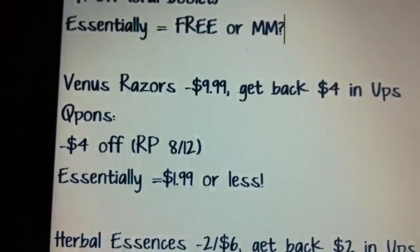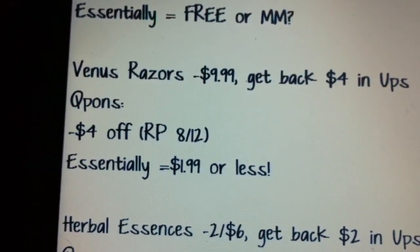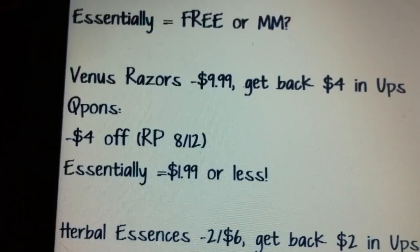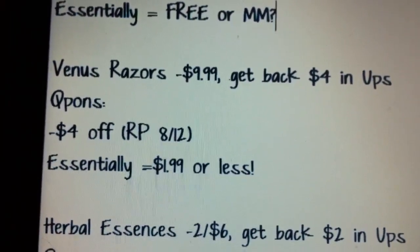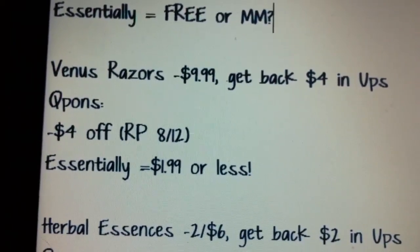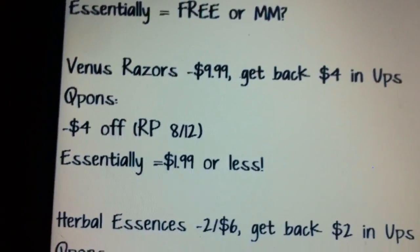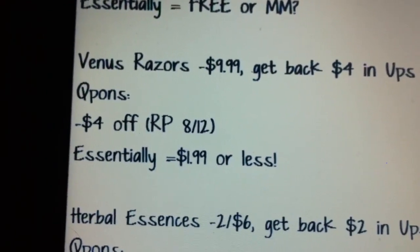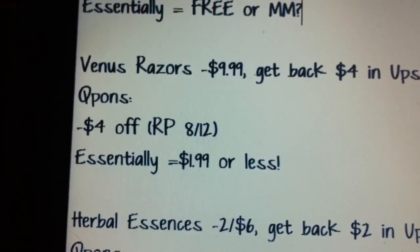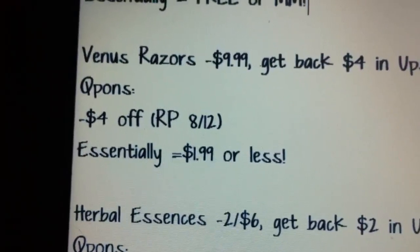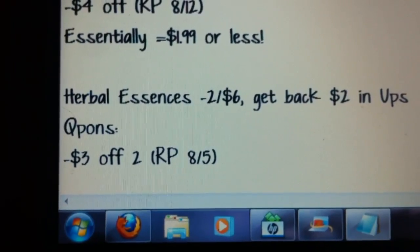The next deal is on Venus razors — they're $9.99 and you get back $4 in UPs. We have those $4-off coupons from the Red Plum of August 12th, so essentially they'll be $1.99 or less. I believe $9.99 is the regular price, so it'll be at least as low as $1.99 for a good razor. If you've been couponing for the last several months you probably have a ton of these, but they don't go bad, so it's a really great deal.